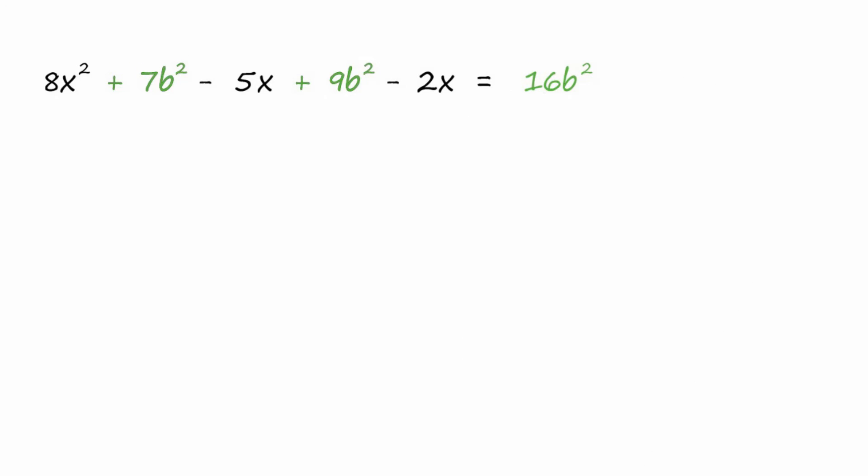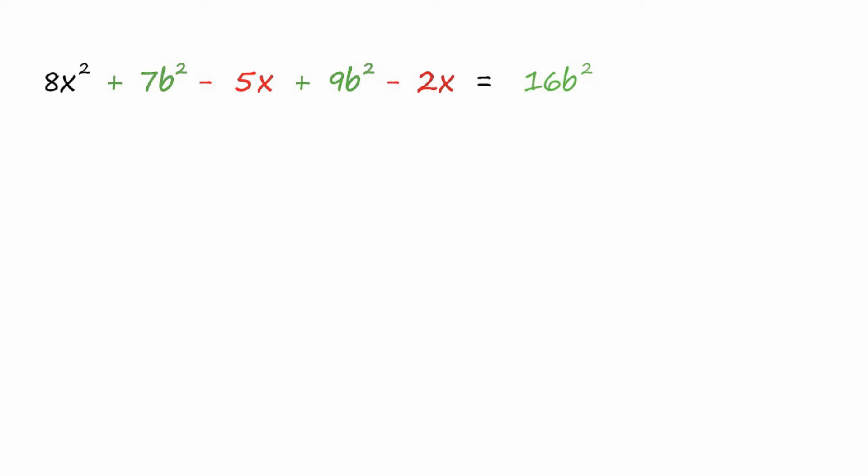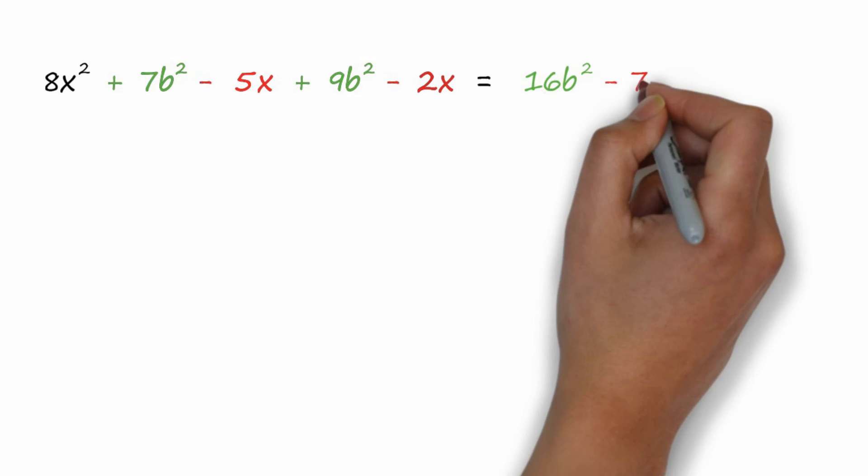What else do you see? Well, we have -5x and -2x. And we could subtract: -5 - 2 = -7, and it would be x.